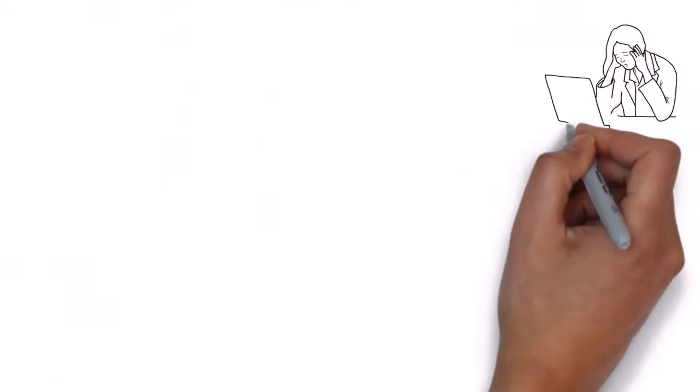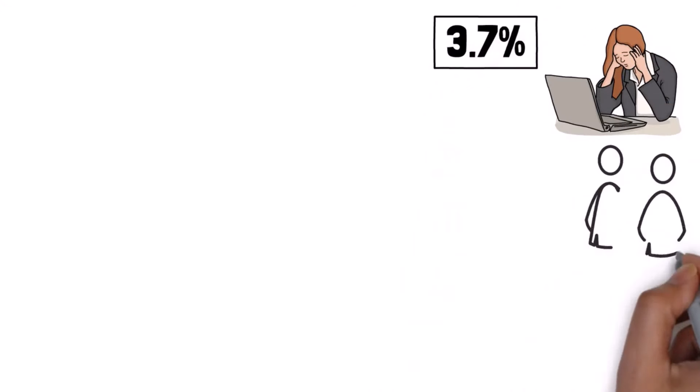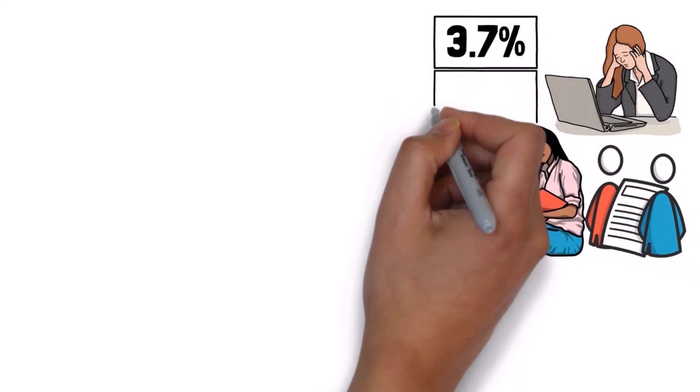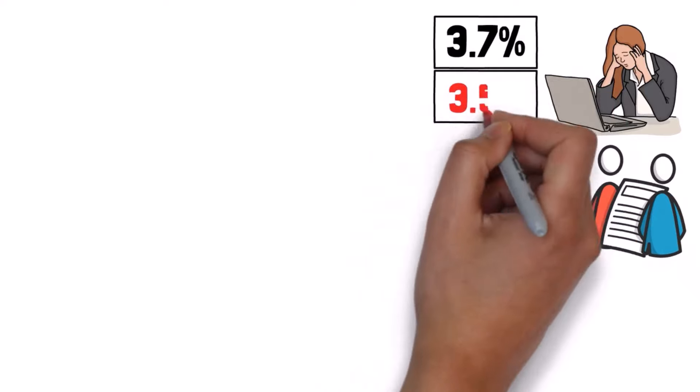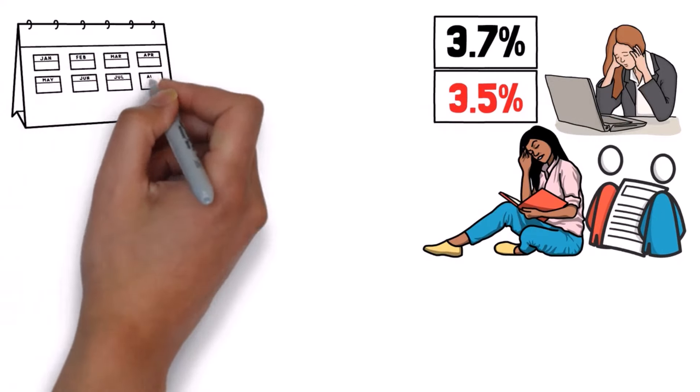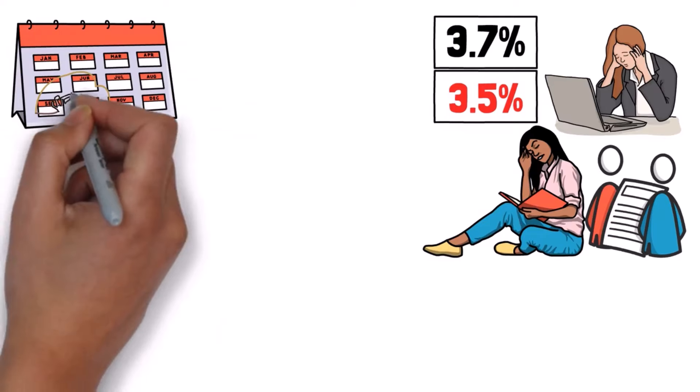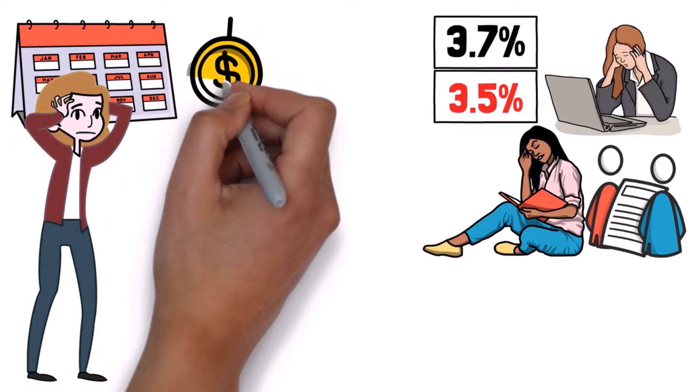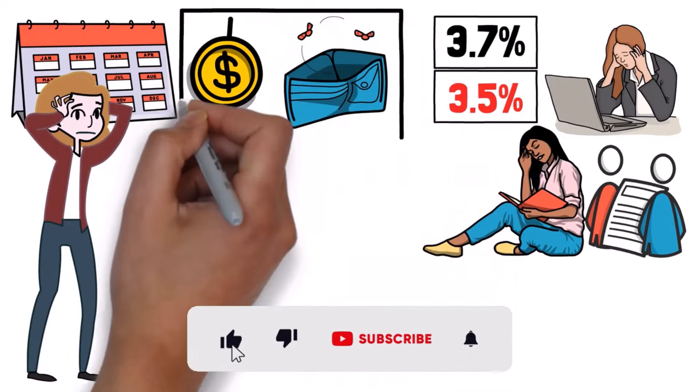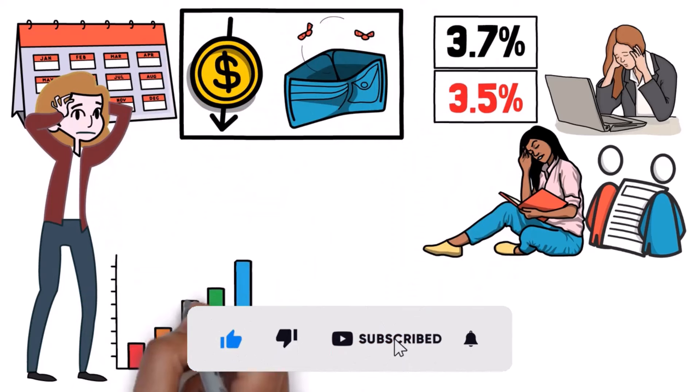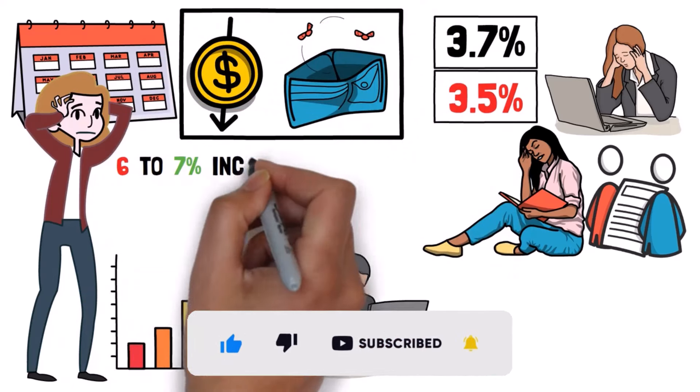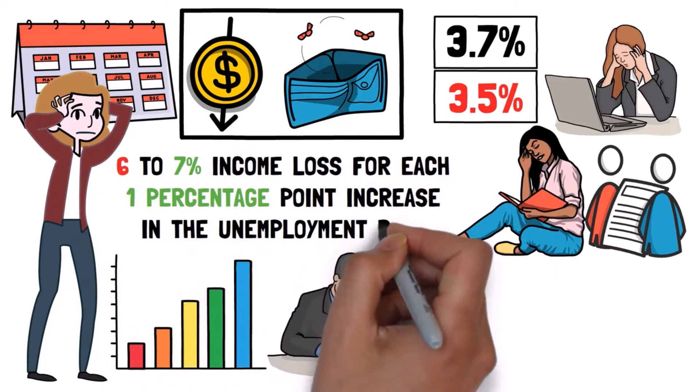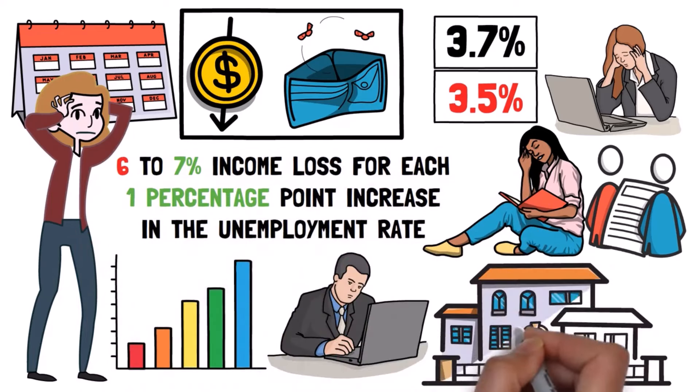Second, despite the low overall unemployment rate of 3.7%, it's important to note that historically, it's challenging for unemployment to stay below 3.5% for an extended period. Past recessions have often followed periods of high inflation, high unemployment, and rising interest rates. Inflation slowing down tends to coincide with higher unemployment. Moreover, when unemployment goes up, the average worker tends to see a 6% to 7% income loss for each 1 percentage point increase in the unemployment rate. This could further worsen home affordability.